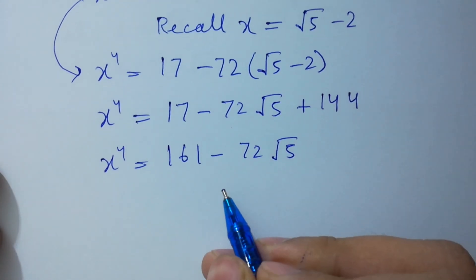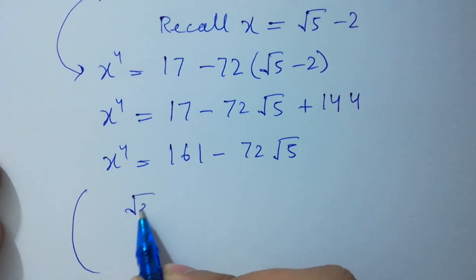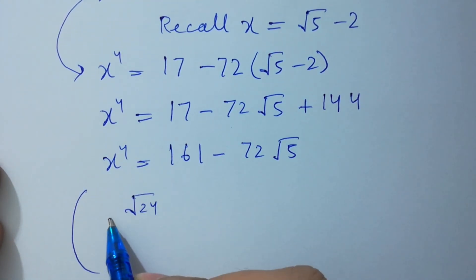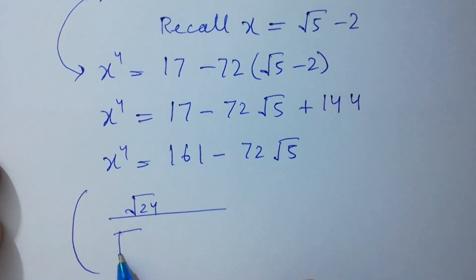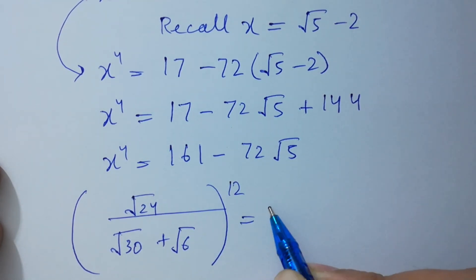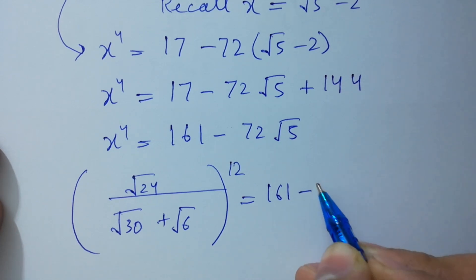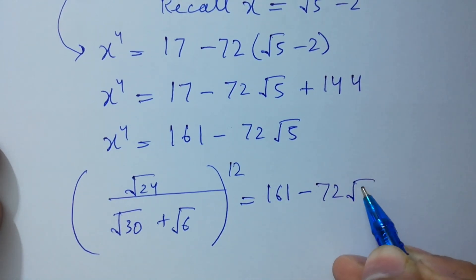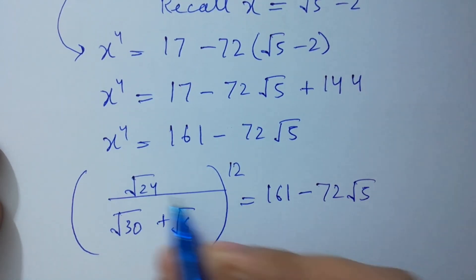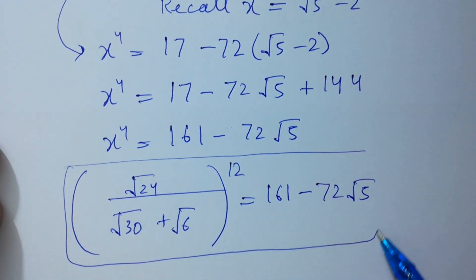This shows that finally, square root of 24 over square root of 30 plus square root of 6, to the whole power 12, equals 161 minus 72 square root of 5. We have solved it without using any calculator.